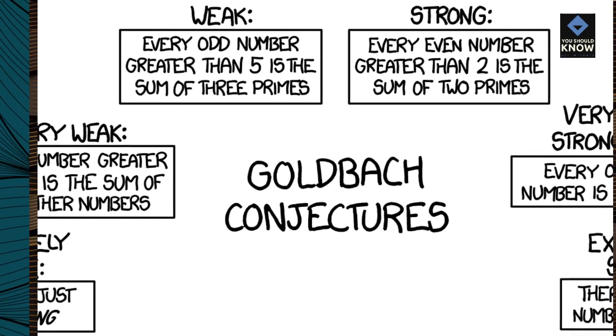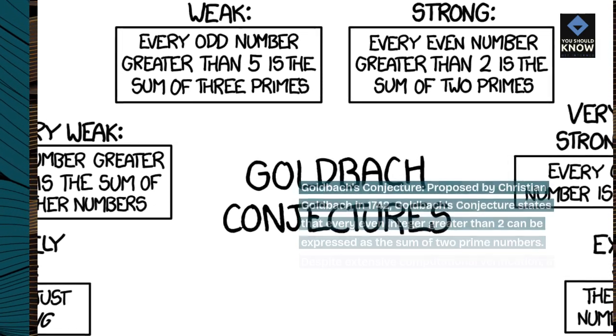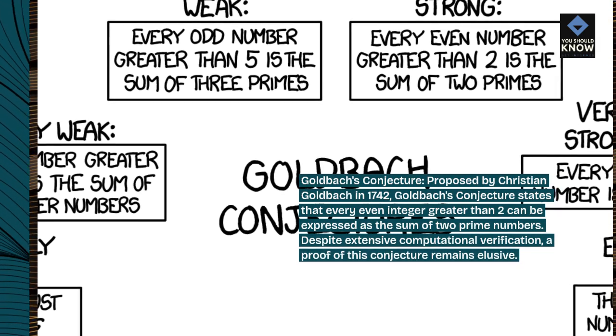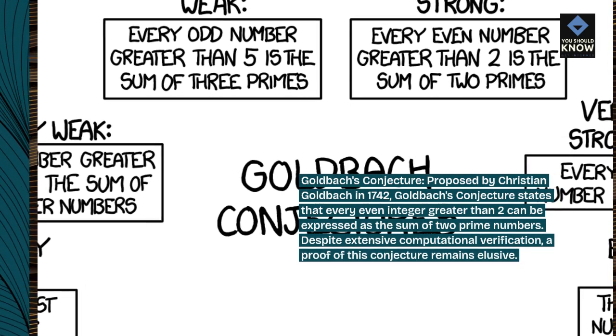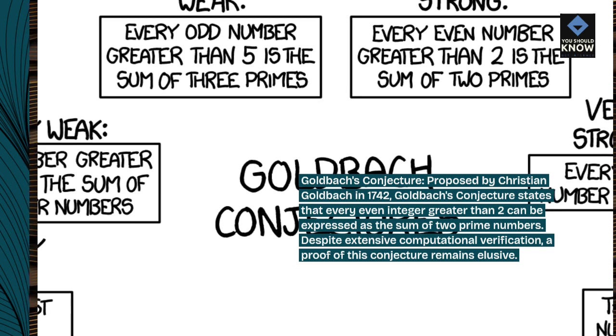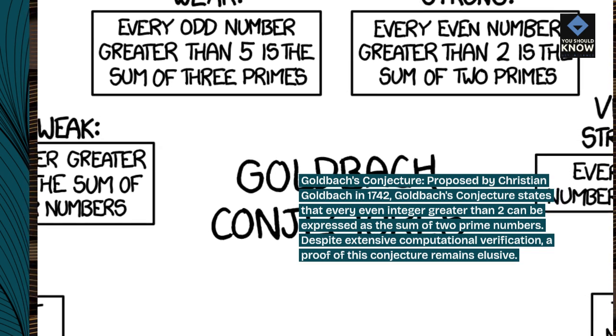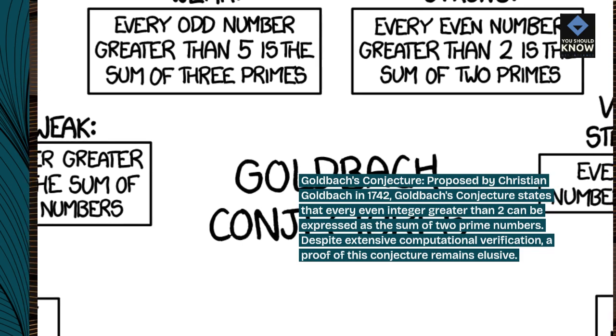Goldbach's Conjecture: Proposed by Christian Goldbach in 1742, Goldbach's conjecture states that every even integer greater than two can be expressed as the sum of two prime numbers. Despite extensive computational verification, a proof of this conjecture remains elusive.